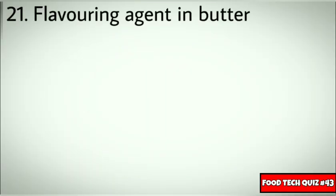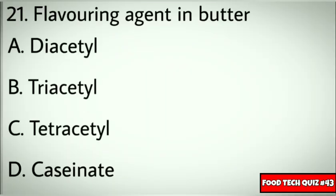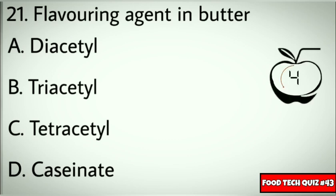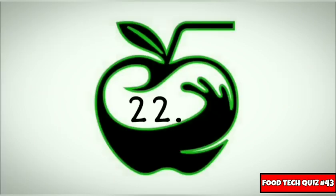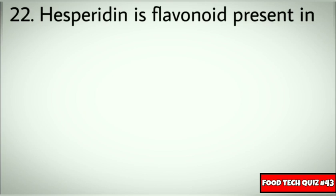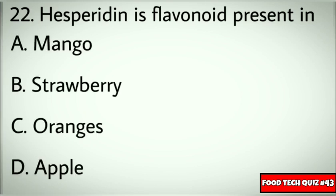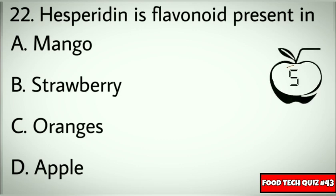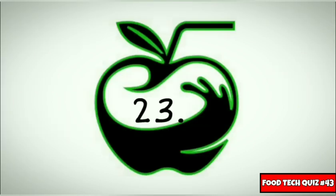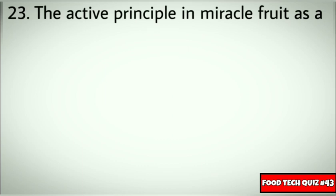Question number 21: Flavoring agent in butter? Options: A) Diacetyl, B) Triacetyl, C) Tetraacetyl, D) Caseinate. Correct answer: A) Diacetyl. Question number 22: Hesperidine is a flavonoid present in? Options: A) Mango, B) Strawberry, C) Oranges, D) Apple. Correct answer: C) Oranges.